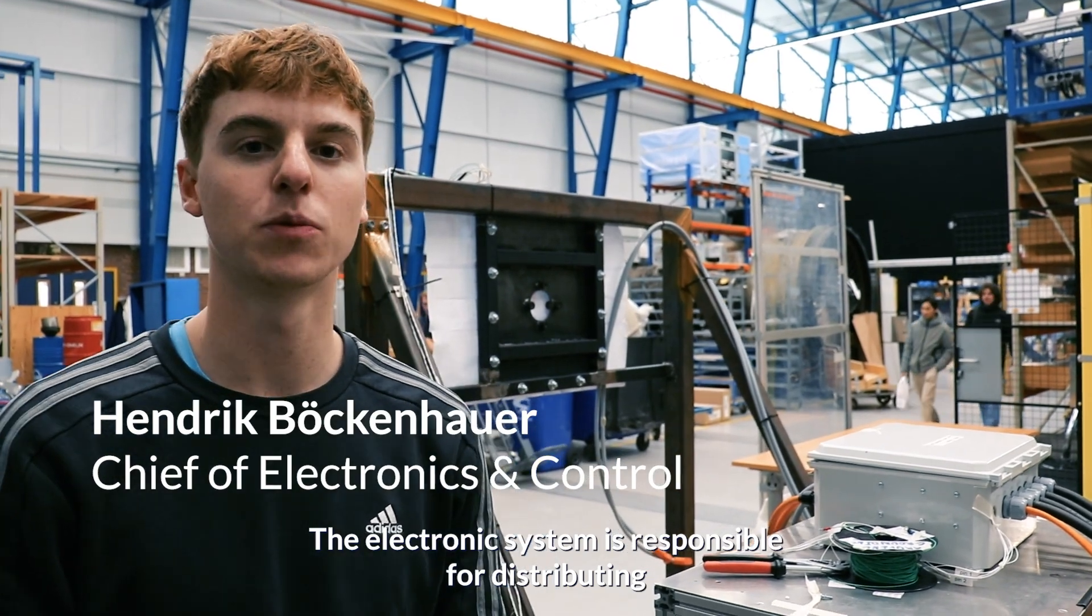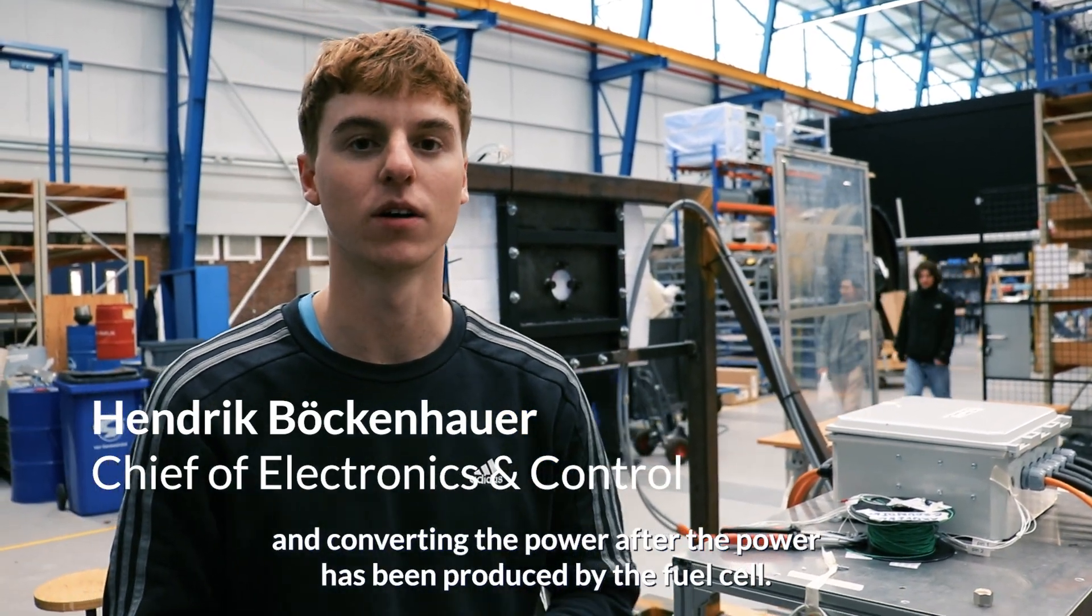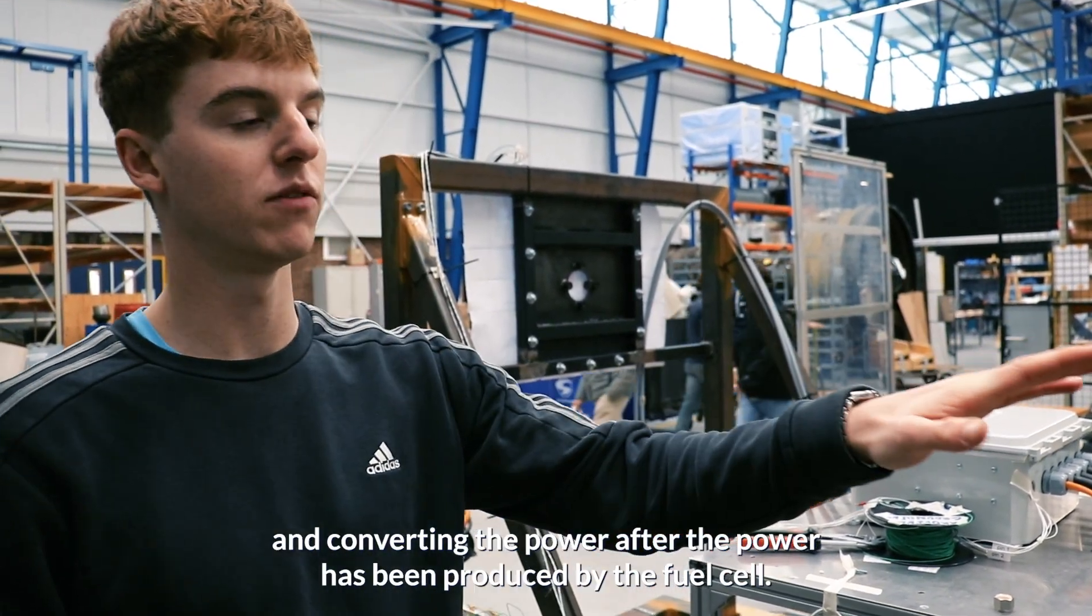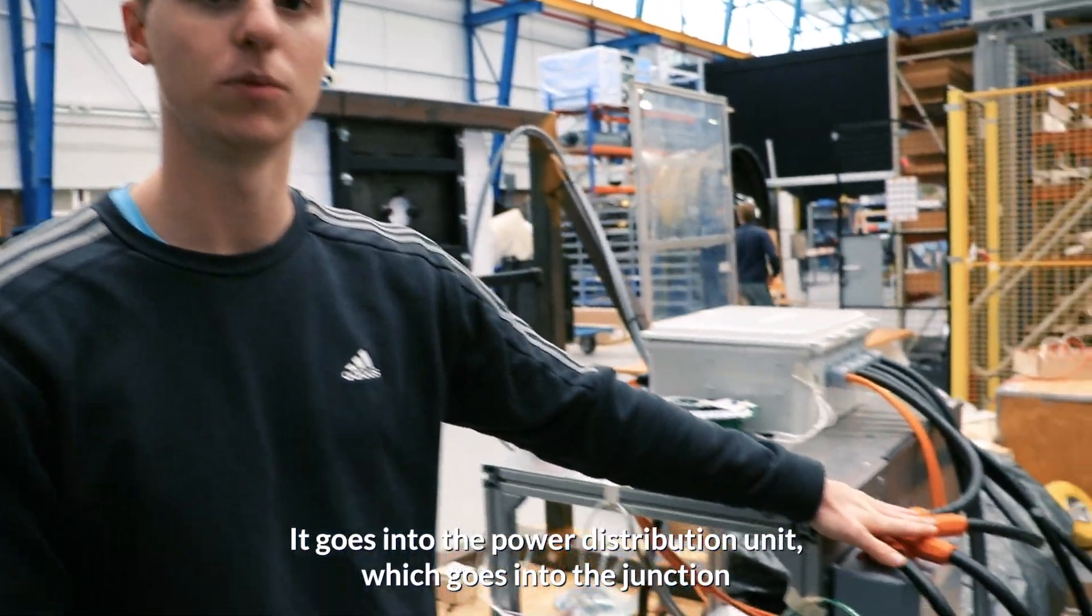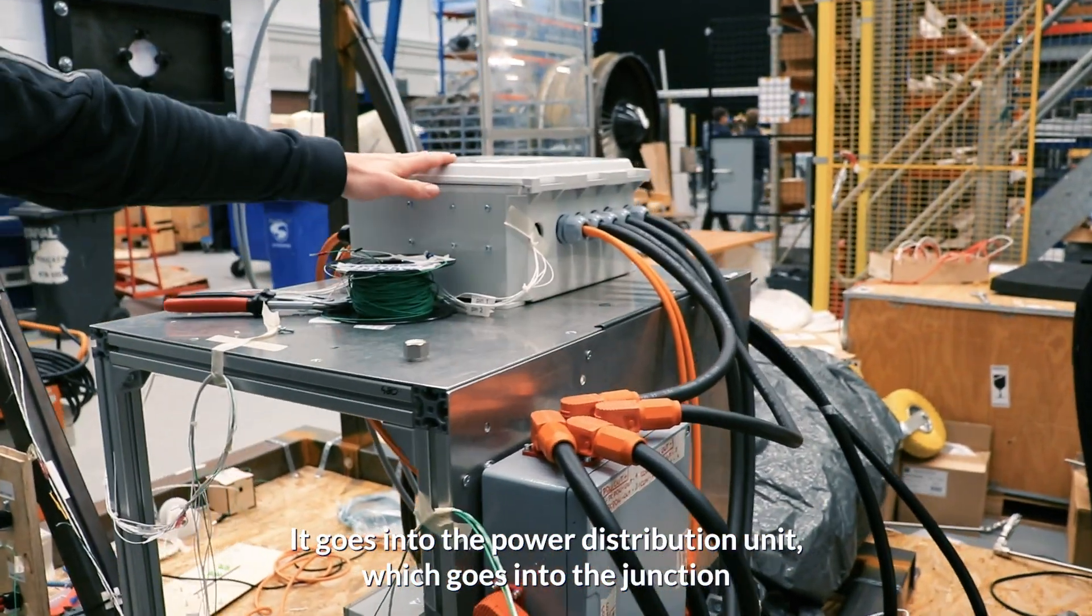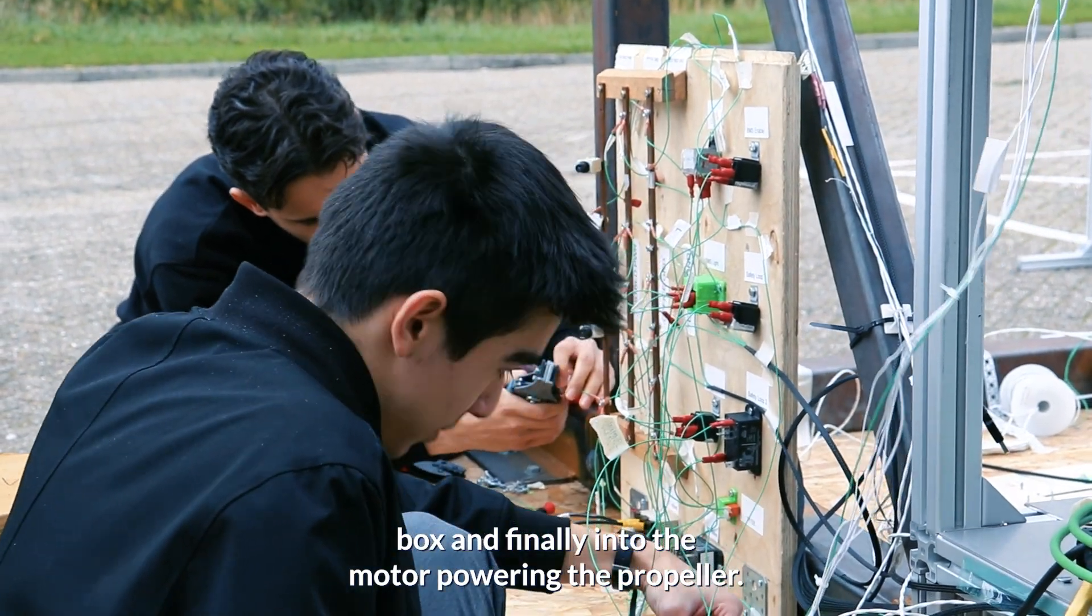The electronic system is responsible for distributing and converting the power. After the power has been produced by the fuel cell, it goes into the power distribution unit, which goes into the junction box and finally into the motor, powering the propeller.